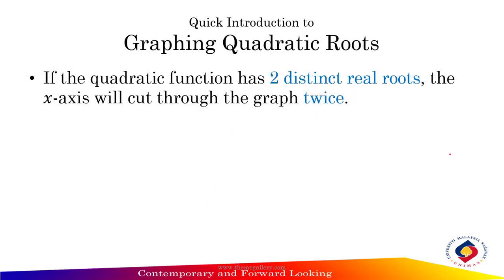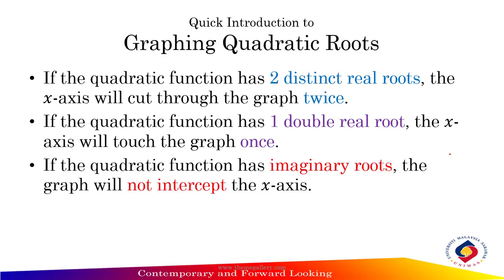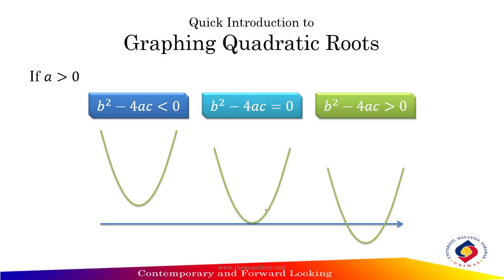If the quadratic function has two distinct real roots, the x-axis cuts through the graph twice. If the function has one double real root, the x-axis will touch the graph once. And if the function has imaginary roots, the graph will not intercept the x-axis. When a > 0: if b² - 4ac < 0, there is no intersection; if b² - 4ac = 0, the x-axis touches the graph once; and when b² - 4ac > 0, the x-axis cuts through the graph twice.